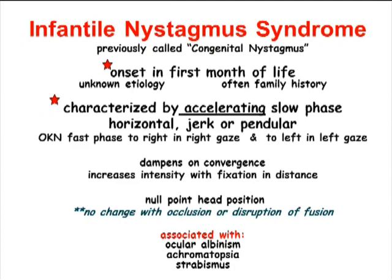Infantile nystagmus syndrome was previously called congenital nystagmus. The hallmark of infantile nystagmus syndrome is that onset is in the first month of life. There is an unknown etiology, but there is often a family history.